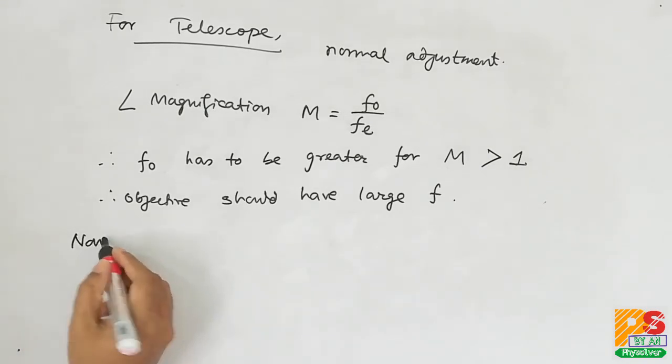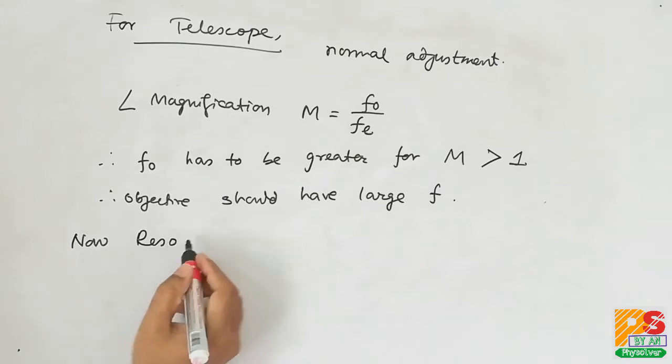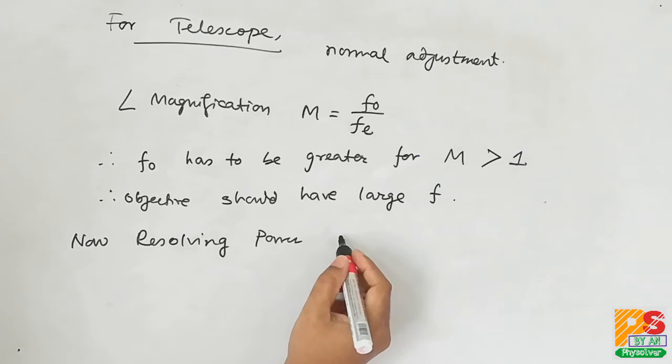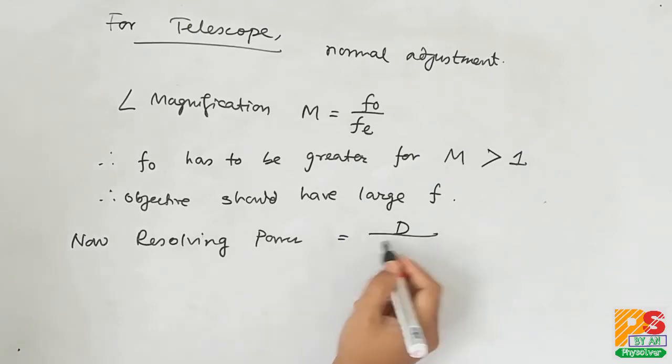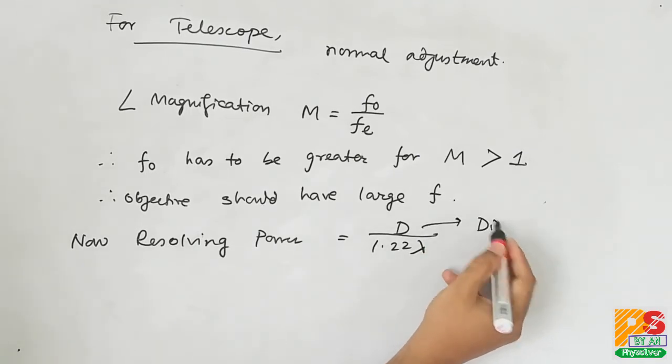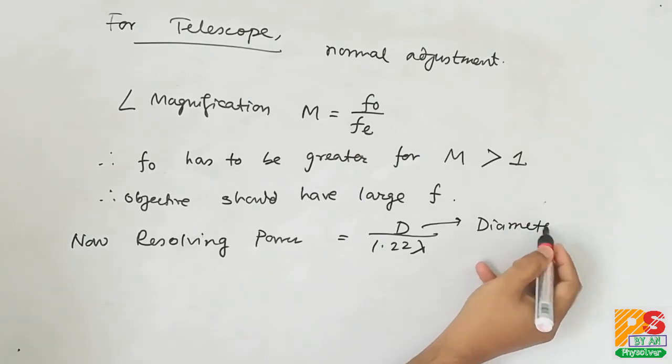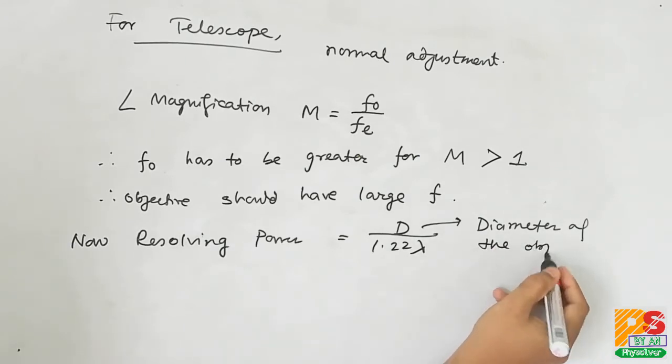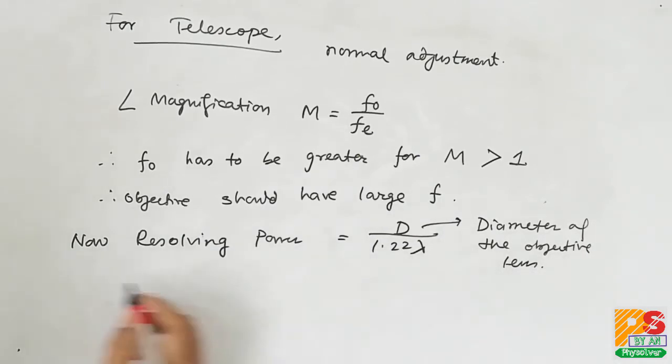Now we will come to resolving power. Resolving power of a telescope is given by D divided by 1.22 lambda, where D is the diameter of the objective lens and lambda is the wavelength of the light used.